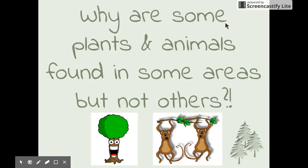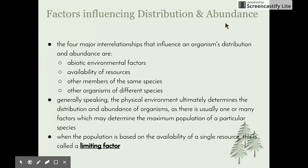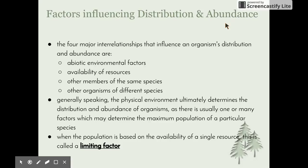So why are some plants and animals found in some areas but not others? There are a number of different factors influencing the distribution and abundance of species. The four major interrelationships are: abiotic environmental factors, including the availability of water, gases, salinity, and sunlight; and the availability of resources — whether there's enough food to sustain the population of organisms in a particular area.